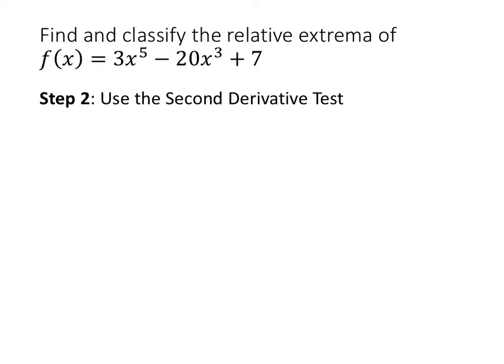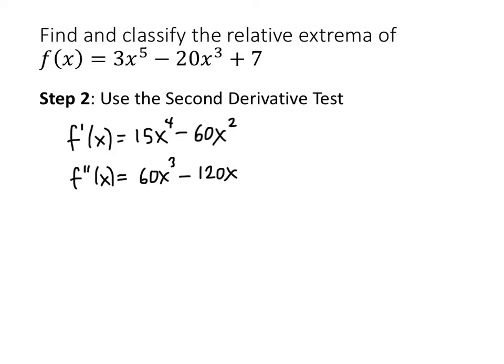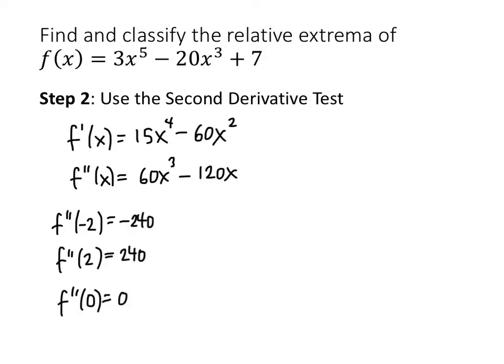The nice thing about the second derivative test is that all we have to do is plug those critical values into our second derivative formula — we don't have to pick values to the left and right like with the first derivative test. Our first derivative was 15x to the 4th minus 60x squared, so our second derivative is 60x cubed minus 120x. We had three critical values: negative 2, positive 2, and 0. When we plug negative 2 into the second derivative, we get a negative number, which means f has a relative maximum at x equals negative 2.